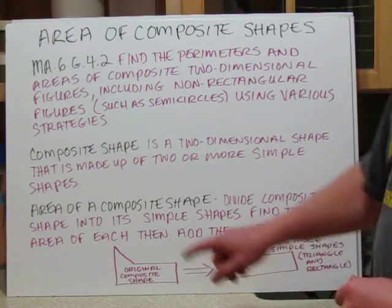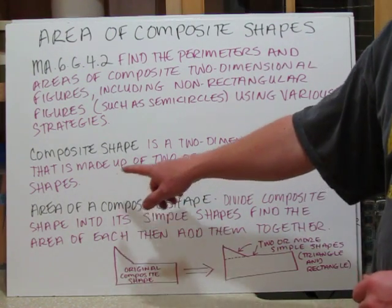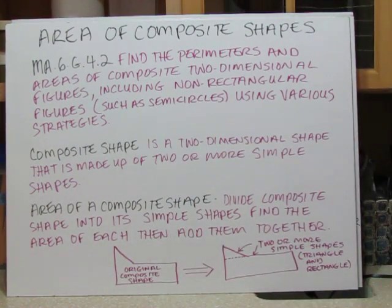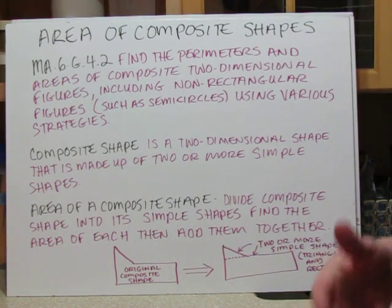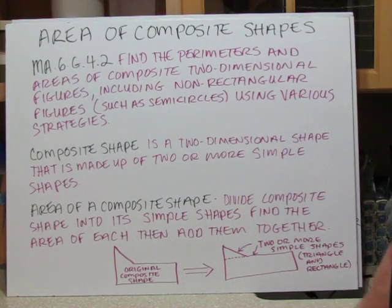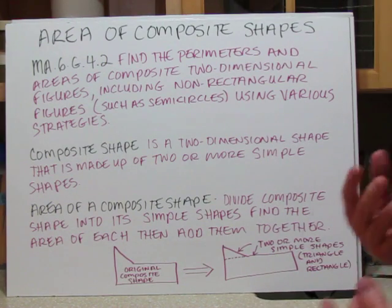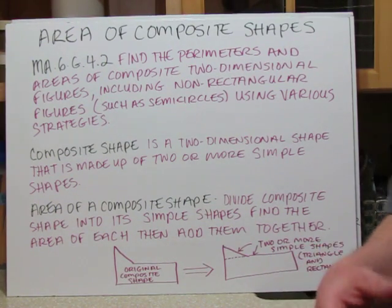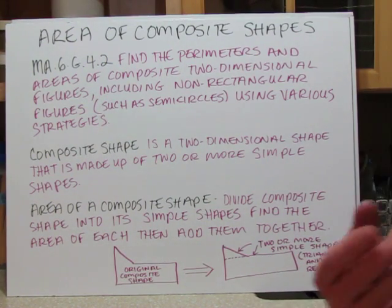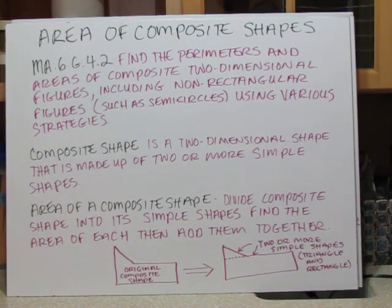First, let me give you a definition for a composite shape. It is a two-dimensional shape that is made up of two or more simple shapes — we're talking triangles, rectangles, stuff that you should be very familiar with.